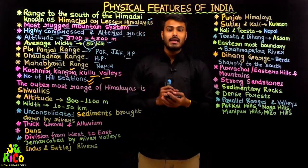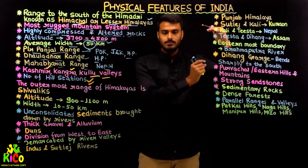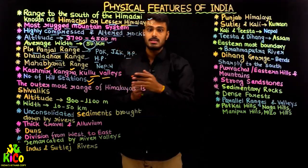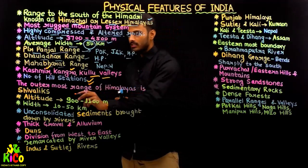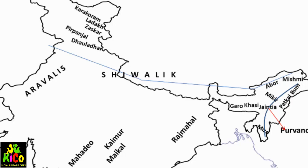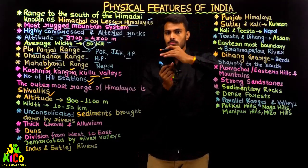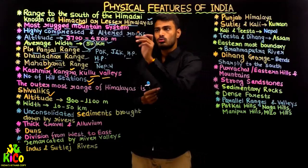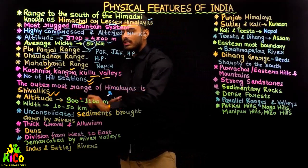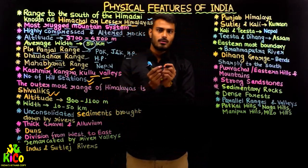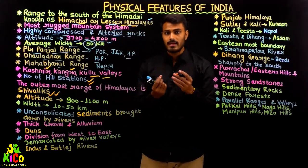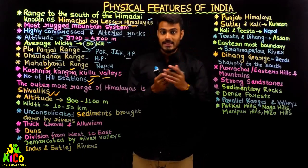The southernmost part of the Himalayan mountain range is known as the Shivalik range. So from top to bottom: we have Greater Himalayas at the top, then Lesser Himalayas, and then further south is the Shivalik range. It is a mix of plains as well as small hills and hilly areas. Its altitude is not very high and its width is also not the greatest.